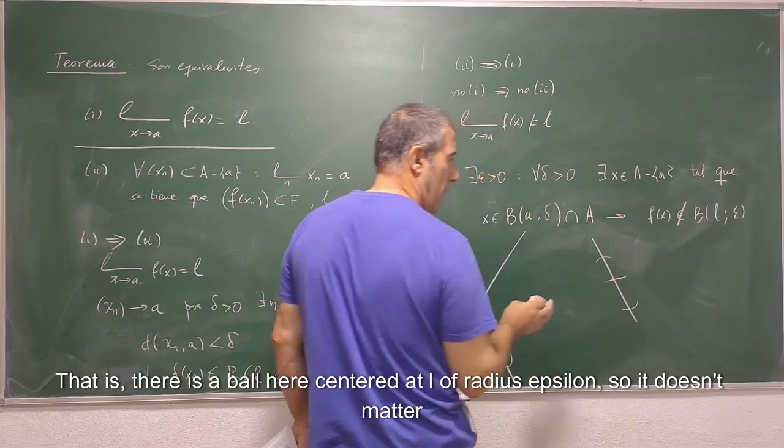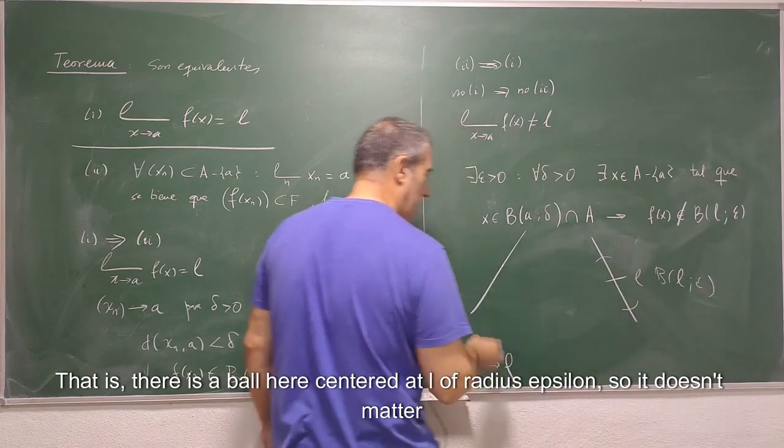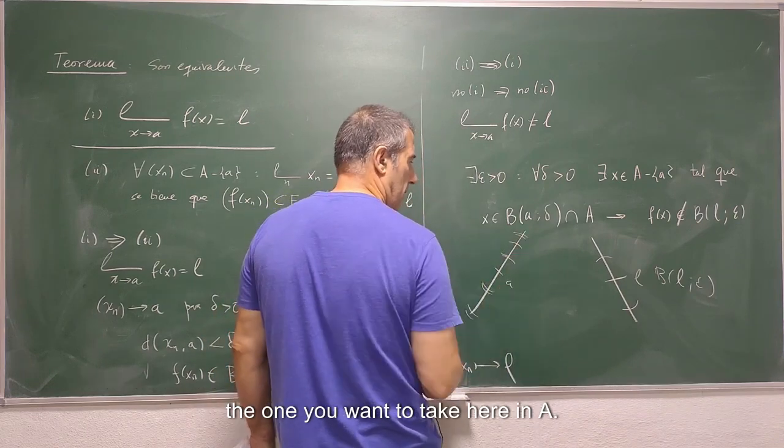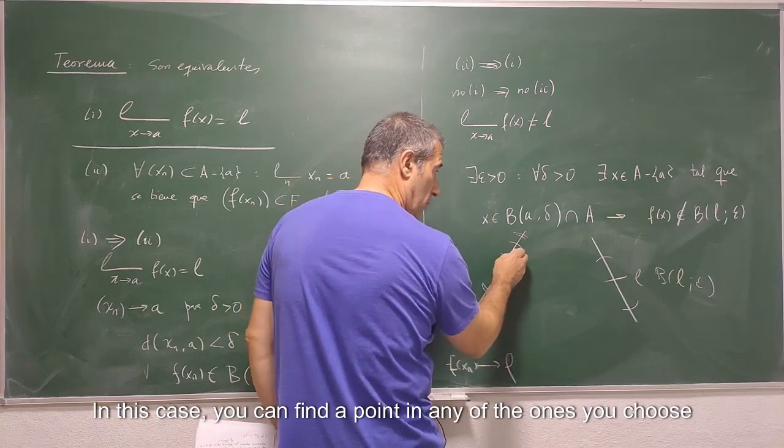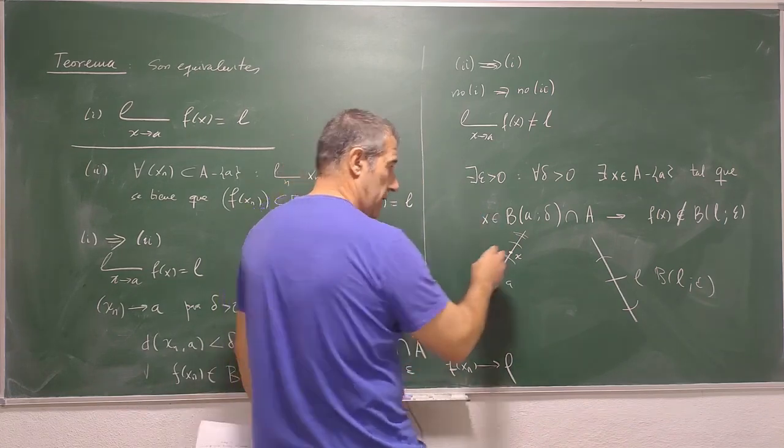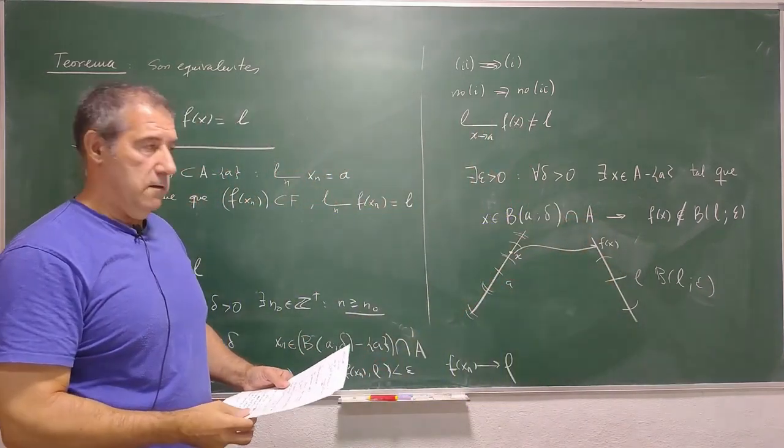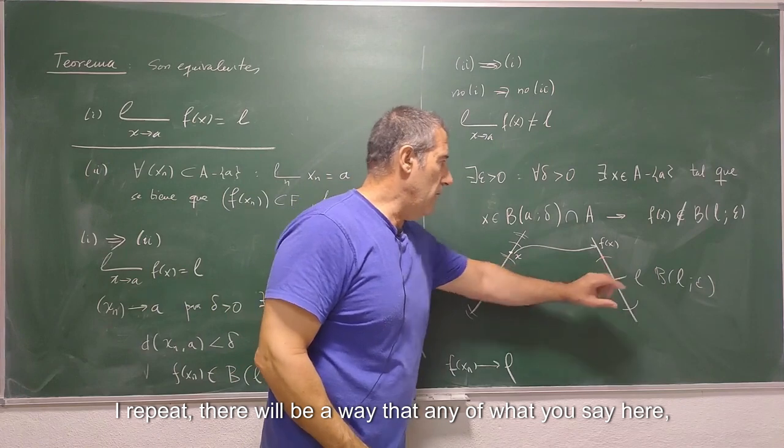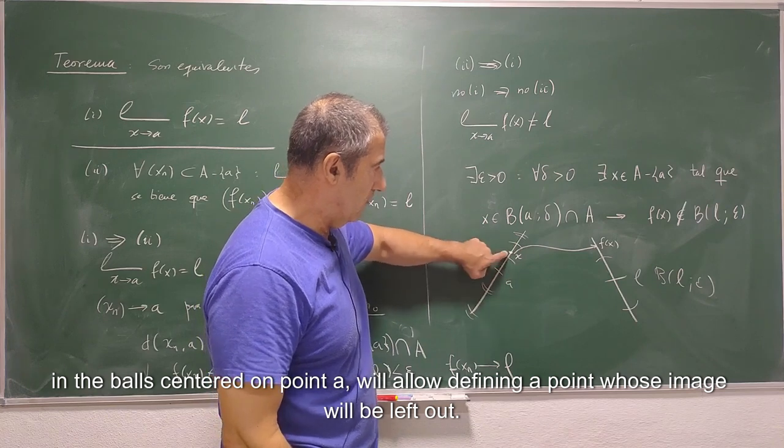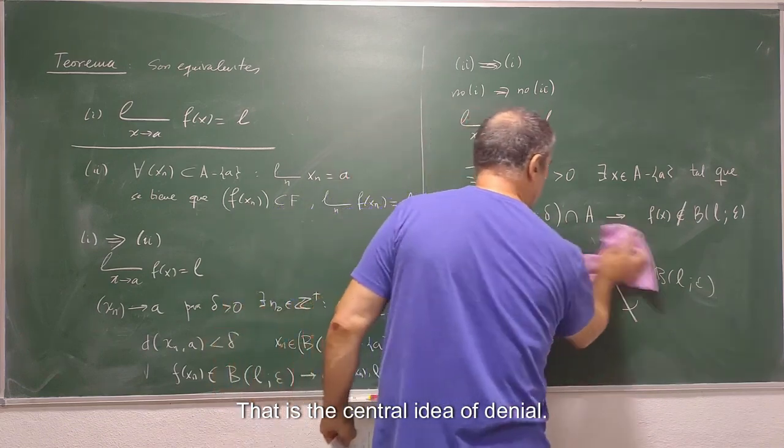So f of x does not belong to the ball centered at L of radius epsilon. That is, there is a ball here centered at L of radius epsilon, so it doesn't matter the one you want to take here in a. In this case, you can find a point in any of the ones you choose so that the image is left out.